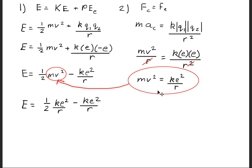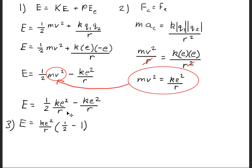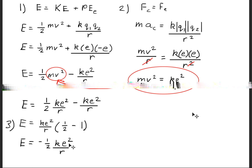We take the relationship mv squared equals ke squared over R and substitute it into the kinetic energy term, so the energy becomes one-half ke squared over R minus ke squared over R. Factoring out ke squared over R leaves one-half minus one, which simplifies to the energy equals negative one-half times k times e squared over R.